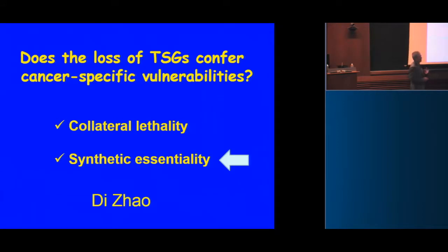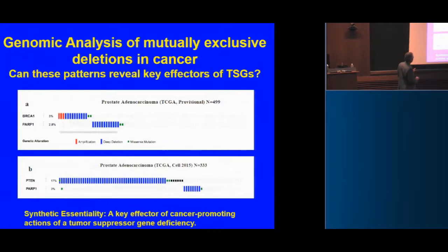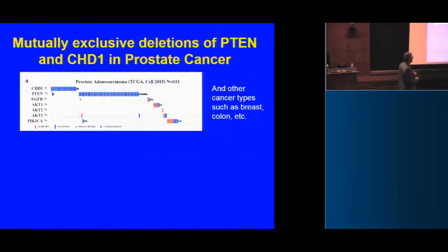Let me introduce another concept — derivative of synthetic lethality but with a slightly different framing. Having sequenced tens of thousands of tumors, we can do statistical analyses and ask a simple question: are there genes that are occasionally deleted but never deleted in the context of a tumor suppressor gene deficiency? This could reflect epistasis, or suggest that the gene becomes an important effector when you knock out the tumor suppressor. We looked for examples and found one interesting protein: CHD1, a chromodomain protein.